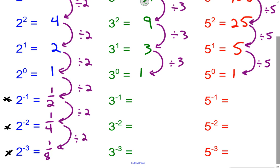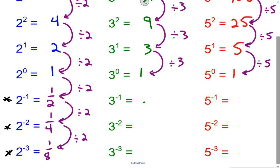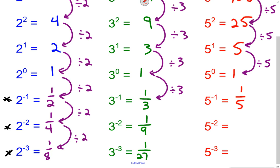Applying this to 3: 3 to the negative 1 — what's 3 to the first? It's 3. That 3 goes to the denominator, giving us 1 third. Continuing: 3 to the negative second is 1 ninth, because 3² is 9. 3 to the negative third is 1 over 27. And for 5: 5 to the negative first is 1 over 5, 5 to the negative second is 1 over 25, and 5 to the negative third is 1 over 125.